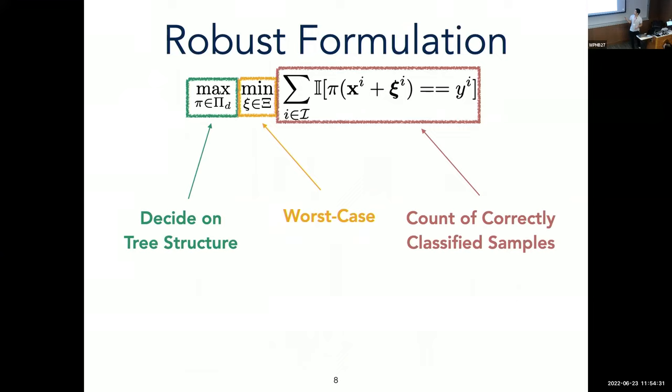So to describe this objective function a little bit more clearly, say we have some data sample xi and then we perturb it by some perturbation ε and then we run it through our tree π and we see what the predicted value is. And then we see if it equals the true label yi of that sample. And so therefore the sum counts the number of correctly classified samples.